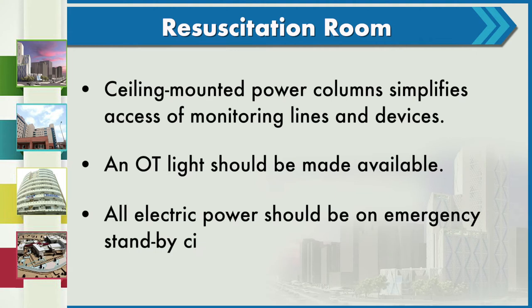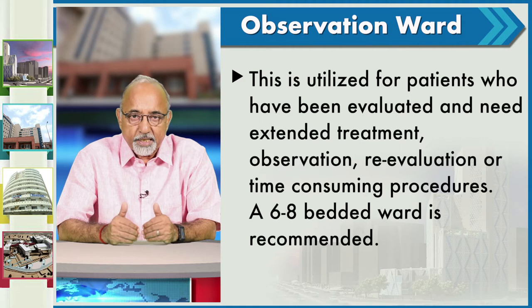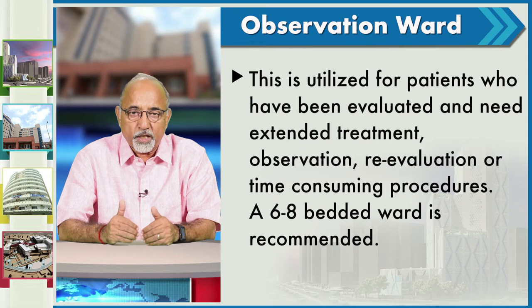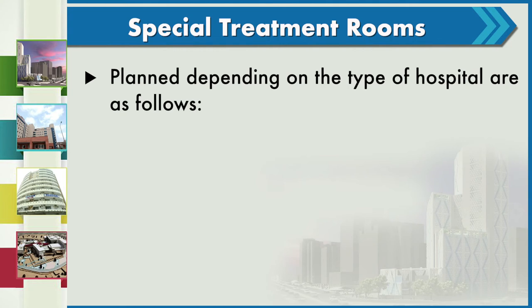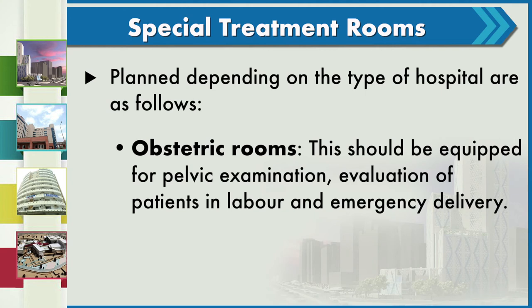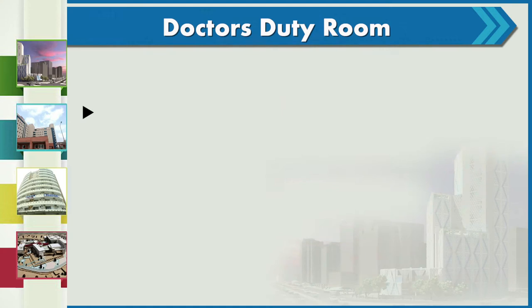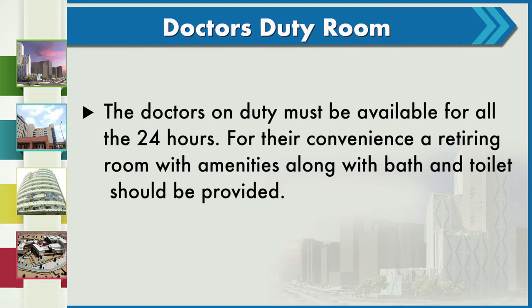Observation wards are utilized for patients who have been evaluated and need extended treatment, observation, re-evaluation or time-consuming procedures; a 6 to 8 bedded ward is recommended. Special treatment rooms planned depending on the type of hospital include obstetric rooms equipped for pelvic examination, evaluation of patients in labour and emergency delivery, and a decontamination room with a flexible hose shower. The doctors on duty must be available 24 hours; for their convenience, a retiring room with amenities including bath and toilet should be provided.